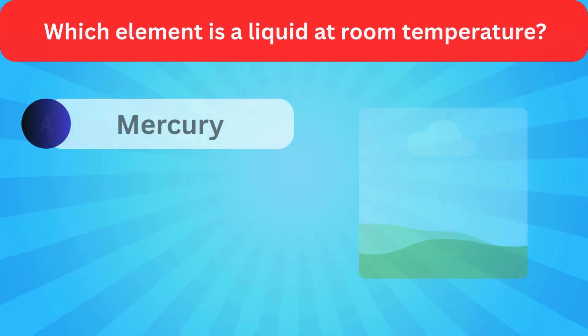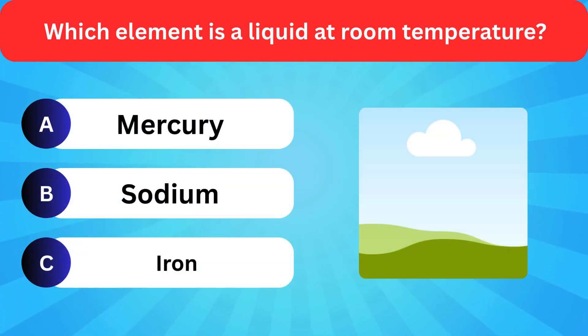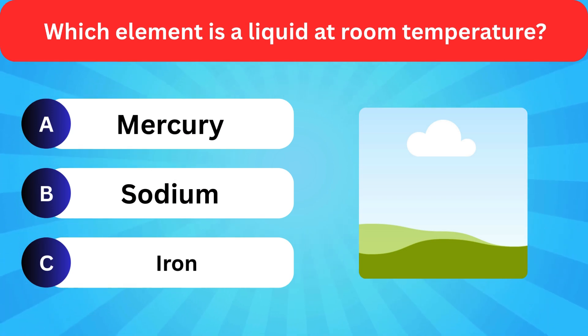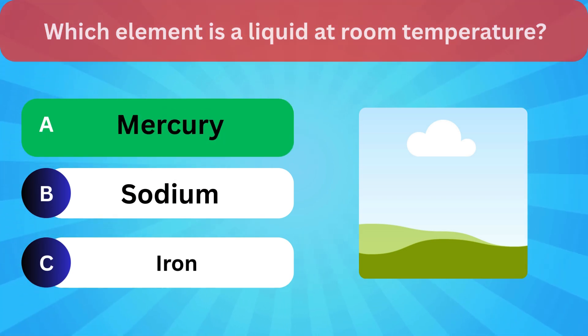Which element is a liquid at room temperature? Options: Mercury, Sodium, Iron. Correct answer is mercury.